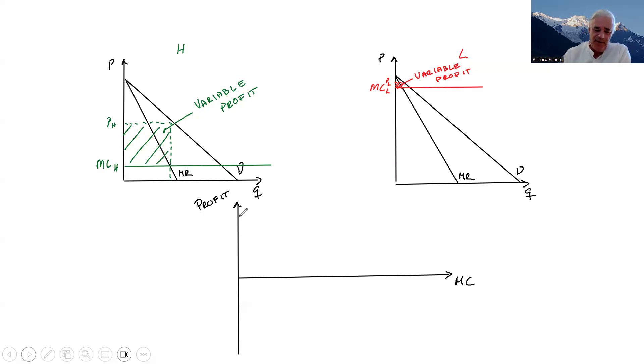So assume that we have variable profits like here. The variable profit.